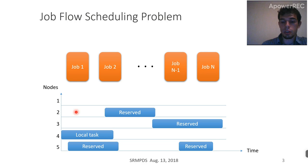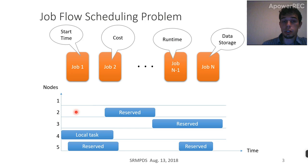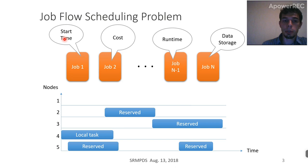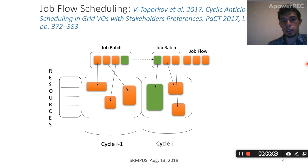Additional complexity may arise because generally every user may have a preference on how the job should be performed. For example, maybe the start time should be minimized, or the total execution cost optimized, or maybe runtime minimized. One solution for the job flow scheduling problem is so-called cyclic scheduling, because we can't just take the whole job flow and schedule it now and into the distant future — we need reliable information about actual node utilization.